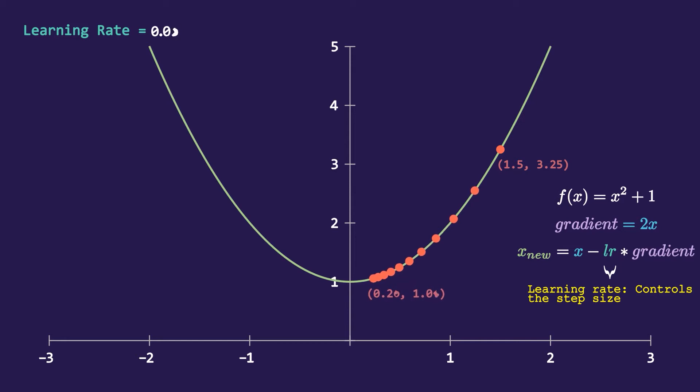But what will happen if we reduce the learning rate from 0.1? Of course the step size will reduce. Because of this you will need more iteration to reach the minimum.